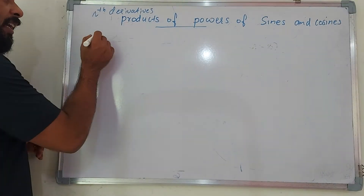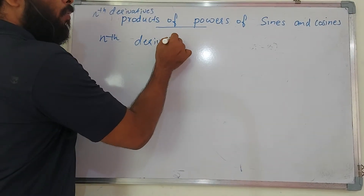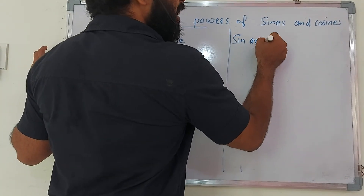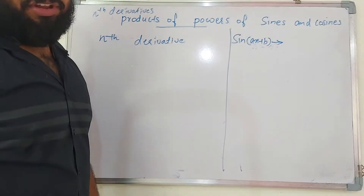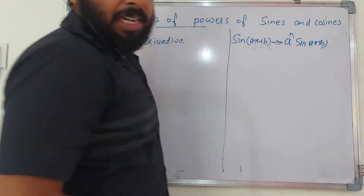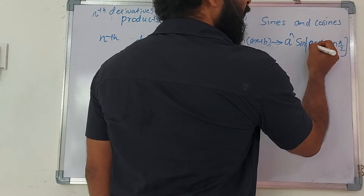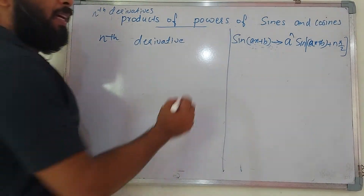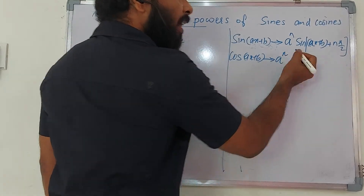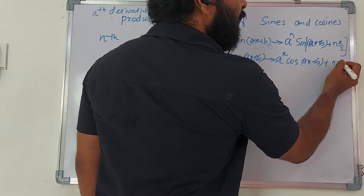Using these formulas for products and powers of sines and cosines, and using the standard nth derivative formulas: the nth derivative of sin(ax + b) is a^n · sin(ax + b + nπ/2), and the nth derivative of cos(ax + b) is a^n · cos(ax + b + nπ/2).